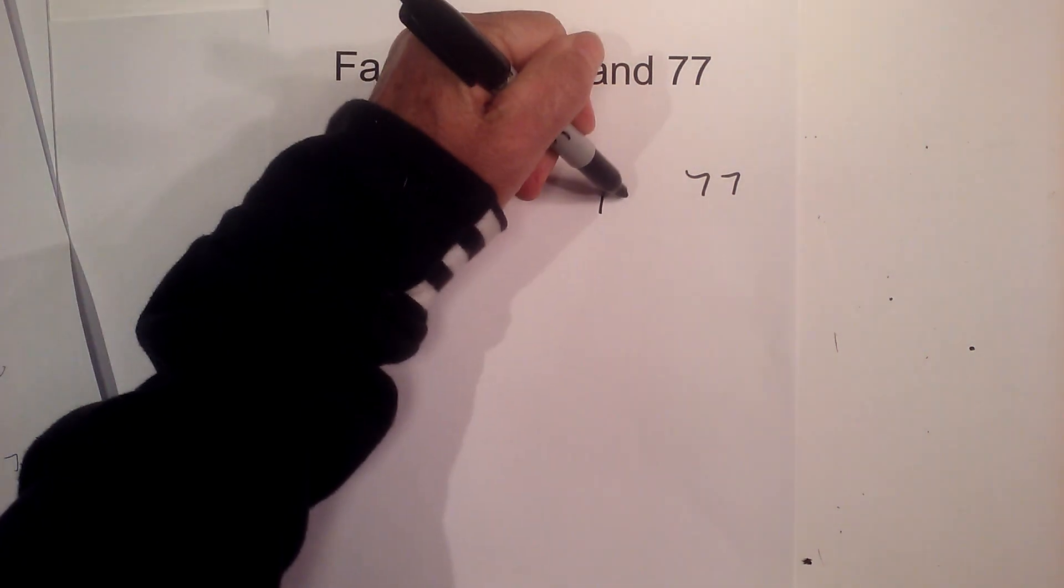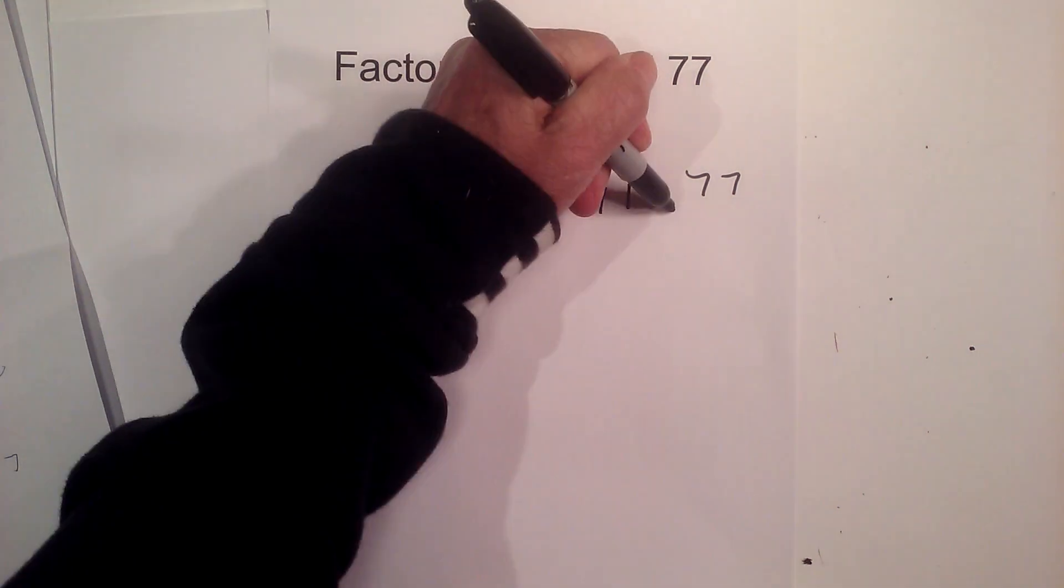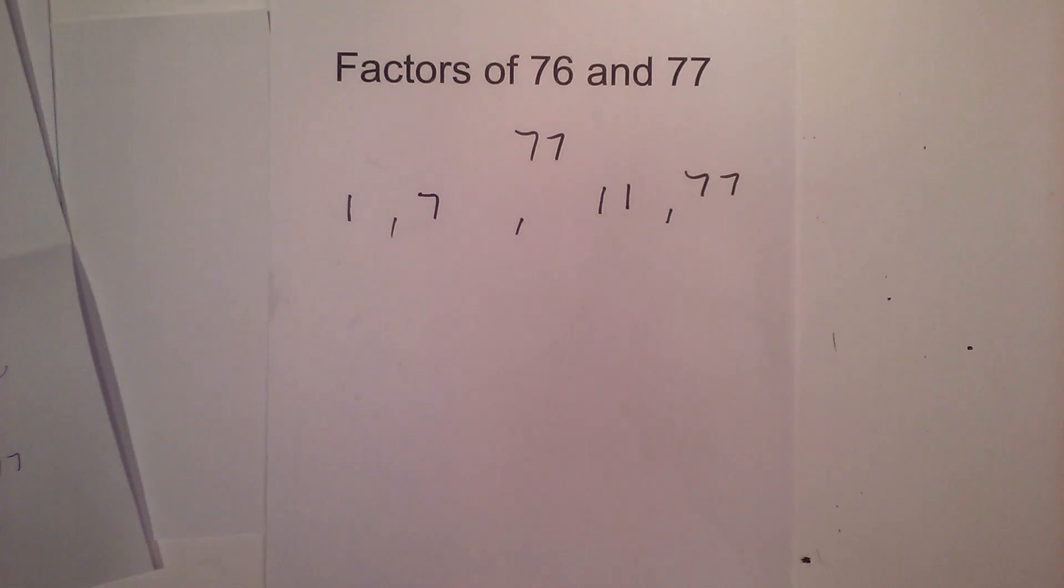But 7 will go in 11 times. So the factors of 77 are 1, 7, 11, and 77.